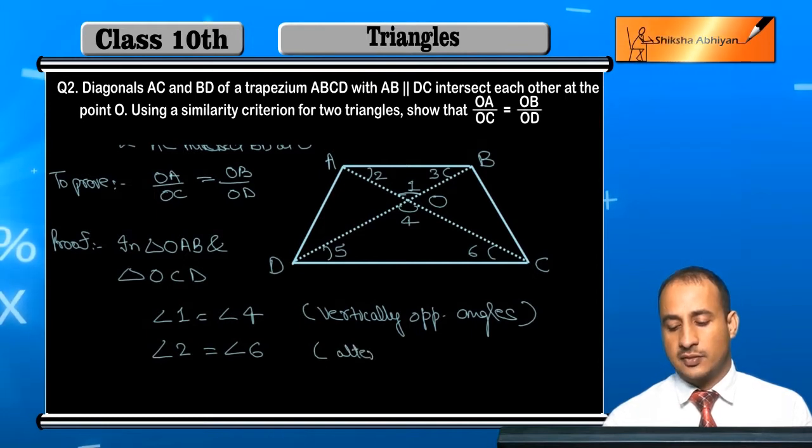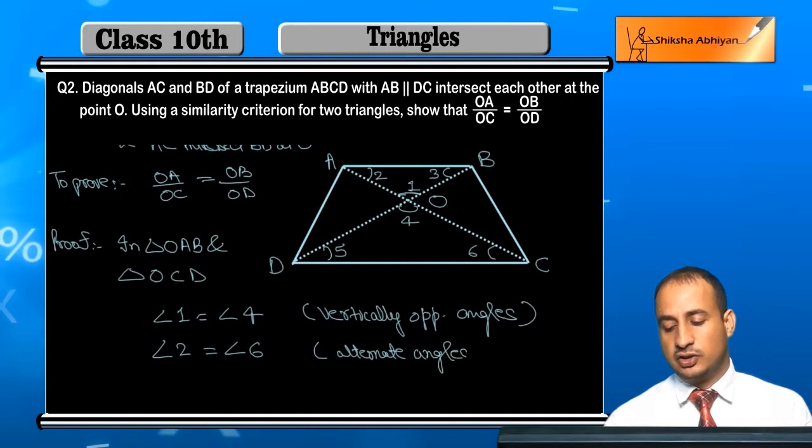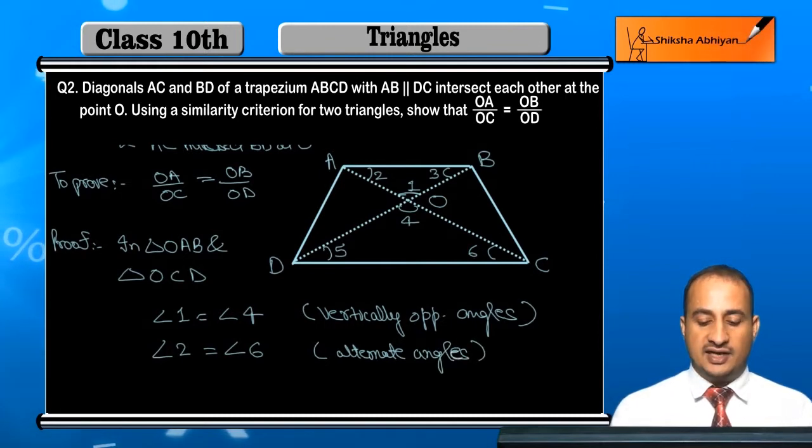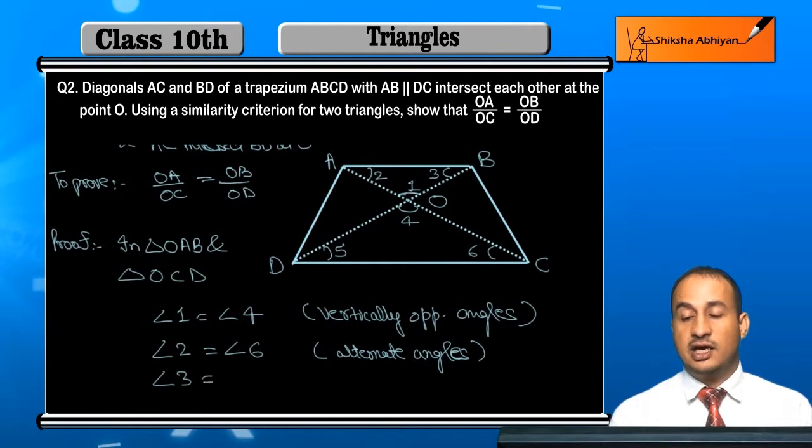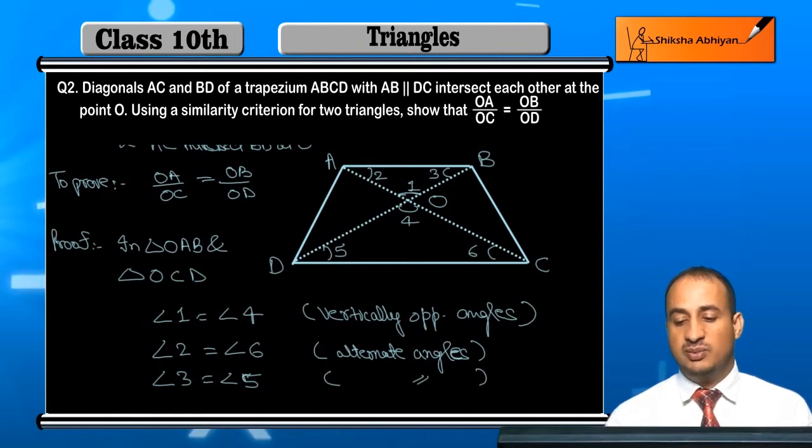And similarly student, angle 3 is equal to angle 5. Here also both are alternate angles because AB and DC are parallel and DB works as transversal.